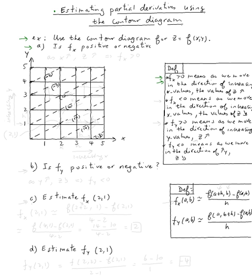f_x is positive means that as we move in the direction of increasing x values — this is the direction of increasing x values — what happens to z? It increases. And f_x being negative means as we move in the direction of increasing x values, the value of z decreases. So let's see: if we go from this point to this point in the direction of increasing x, the z value goes from 2 to 6, so it increases. Similarly, going from this point to this point, z goes from 6 to 10 — it's increasing.